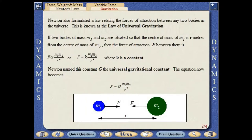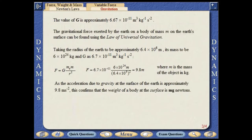Newton also formulated a law relating the forces of attraction between any two bodies in the universe. This is known as the law of universal gravitation. If two bodies of mass m1 and m2 are situated so that the centre of mass of m1 is r metres from the centre of mass of m2, then the force of attraction F between them is given by the formula shown here. Newton named the constant G the universal gravitational constant. The gravitational force exerted by the Earth on a body of mass m on the Earth's surface can be found using the law of universal gravitation.